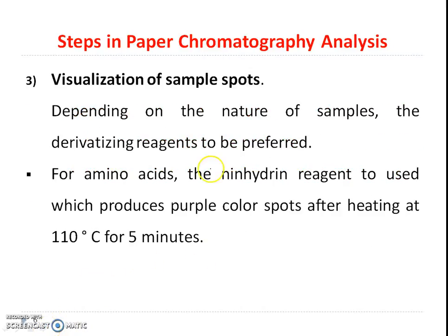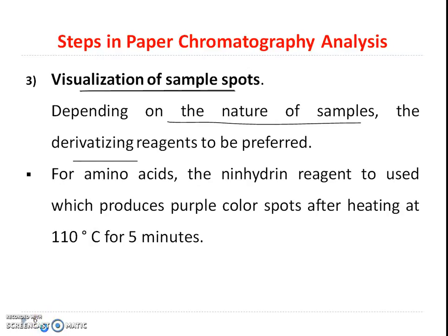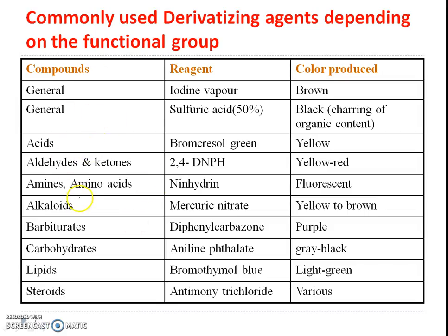The next step is visualization of spots. If the sample is colored, there is no question of visualization — it can be seen with the naked eye. But if the sample is colorless, then depending upon the nature of the sample, derivatizing reagents are preferred. Generally, if the compound is an amine or amino acid, ninhydrin is preferred. For lipids, bromothymol blue is used. If the nature of the compound is acidic, indicators are used for the visualization of spots.